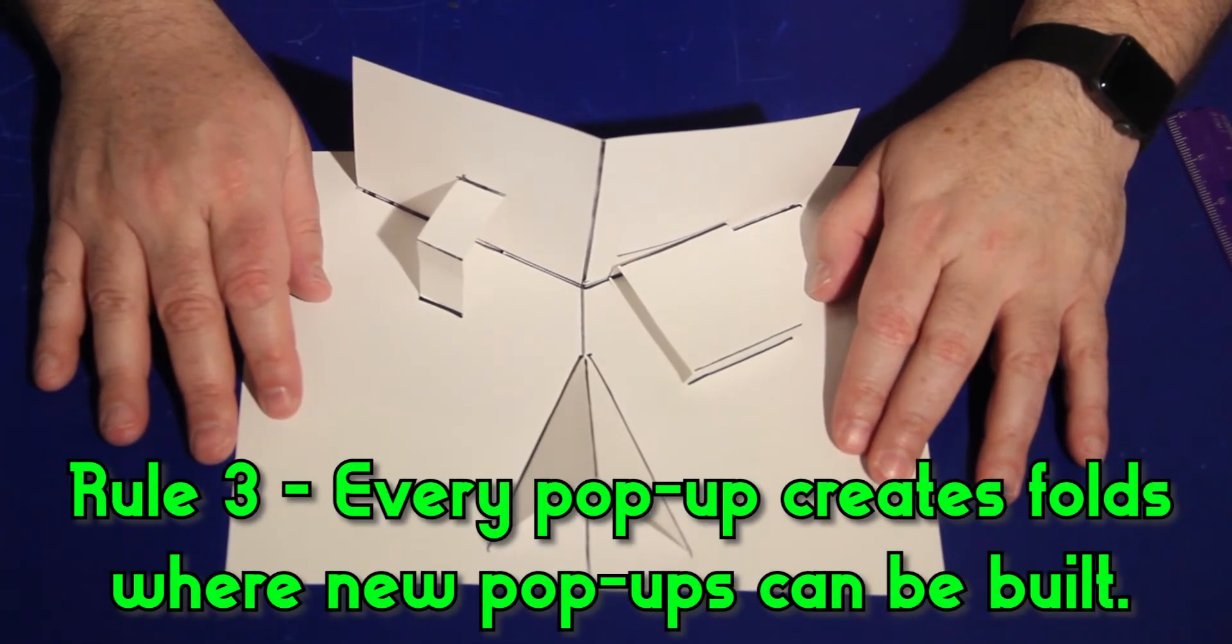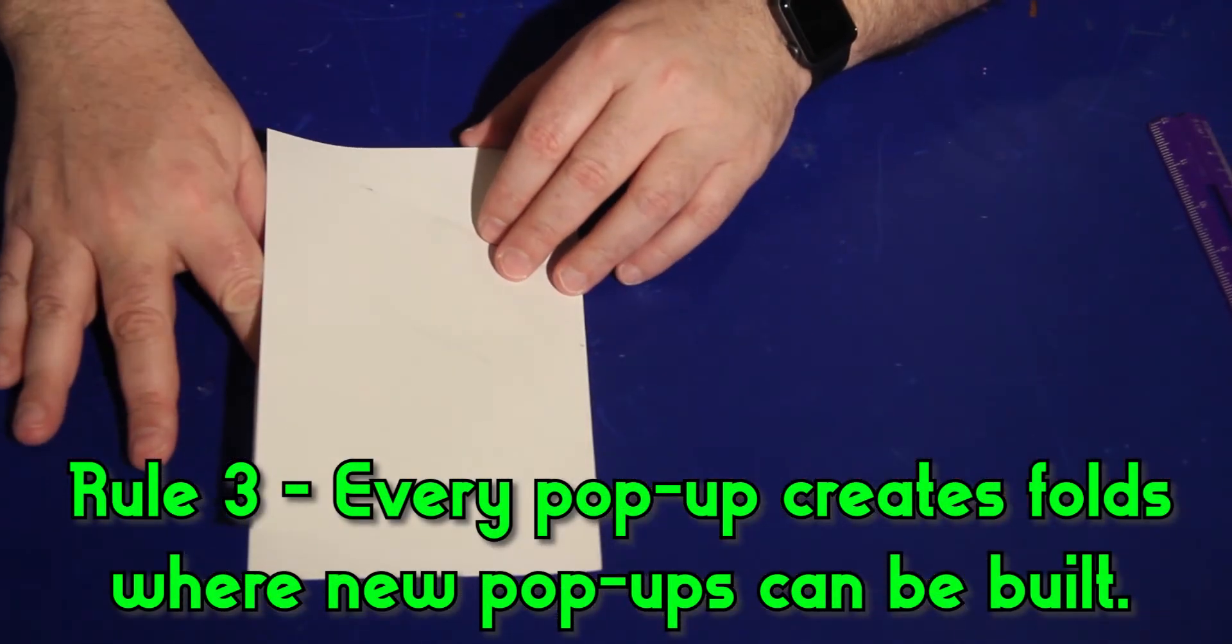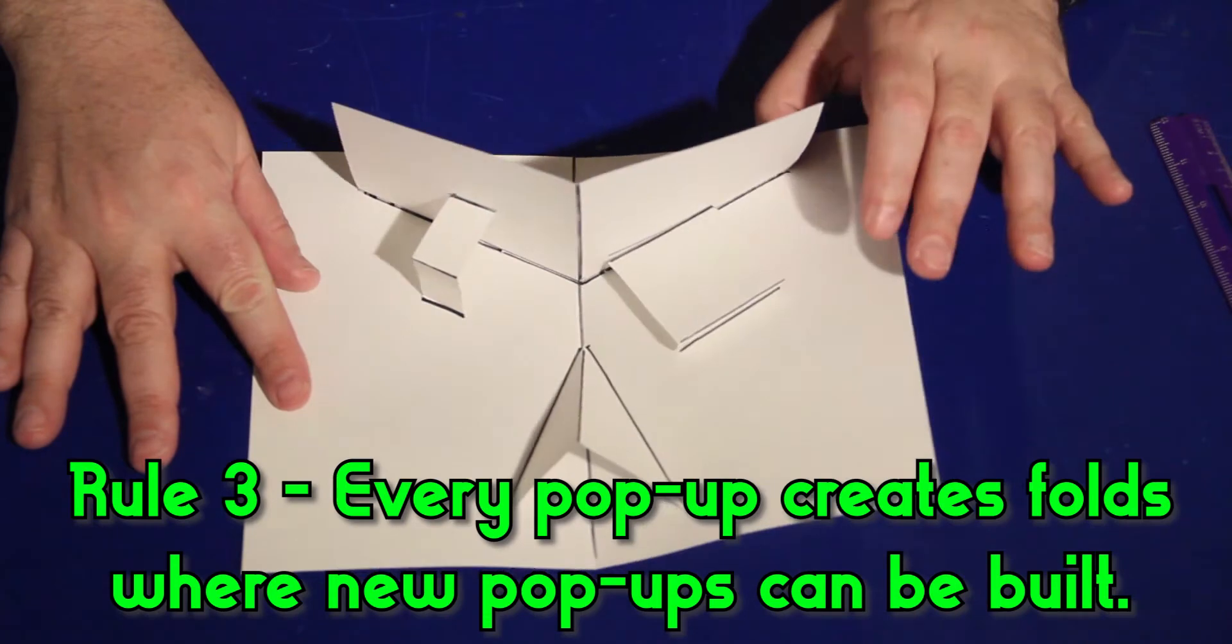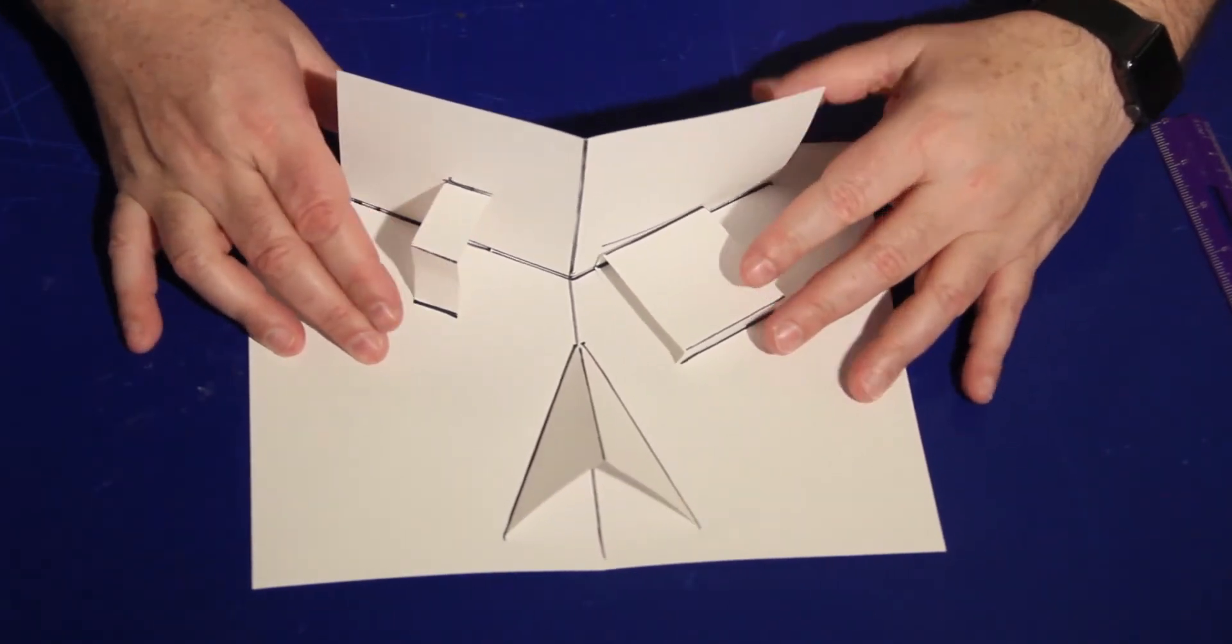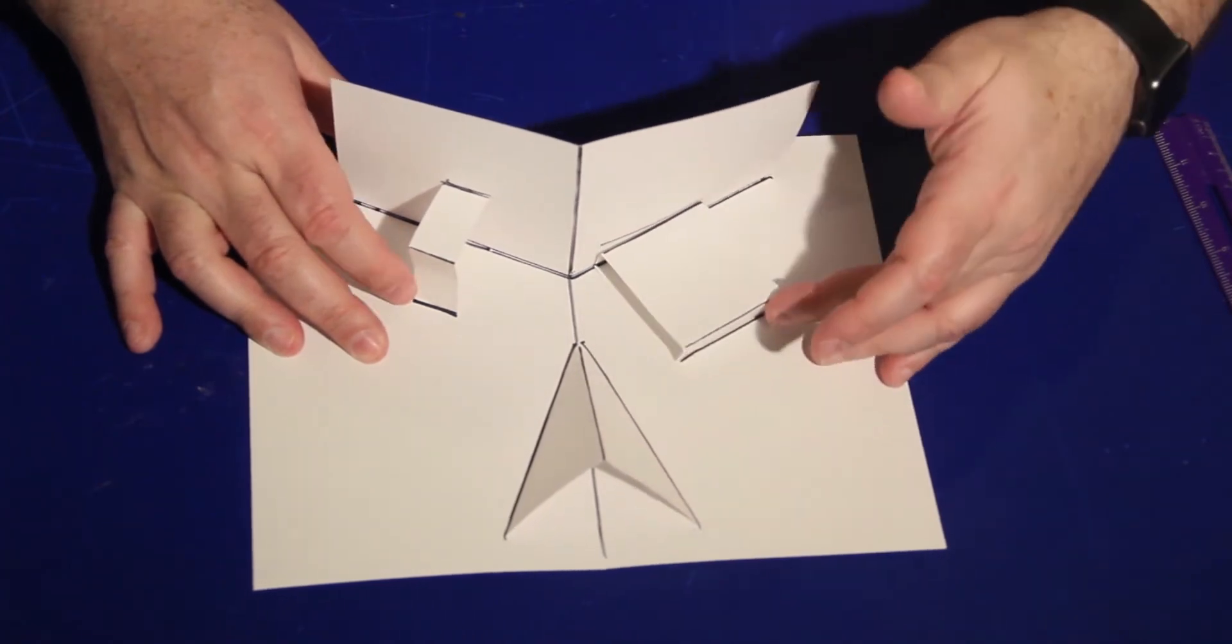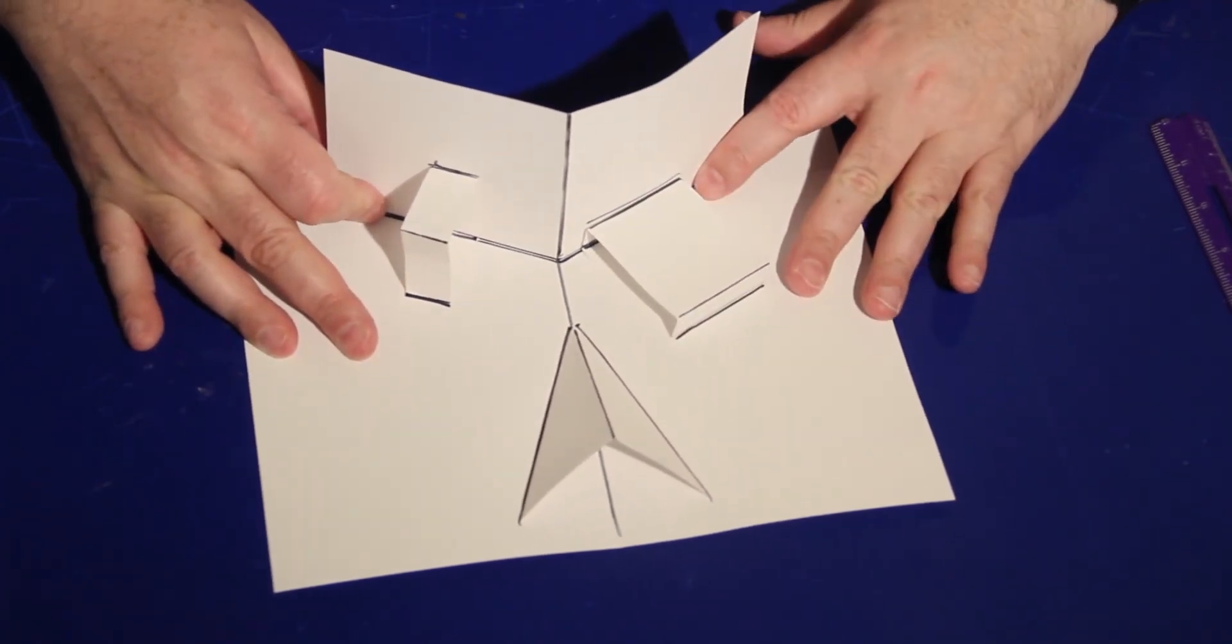Rule 3. The third rule is more about how to make your pop-up even bigger. Every pop-up adds folds, and more pop-ups can be added to those folds. In other words, a simple V-Fold can have more pop-ups added to it at its folds to make it more complex.